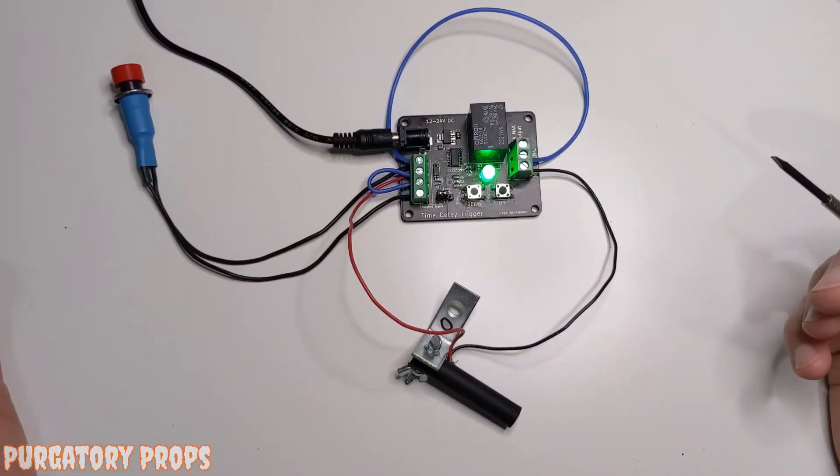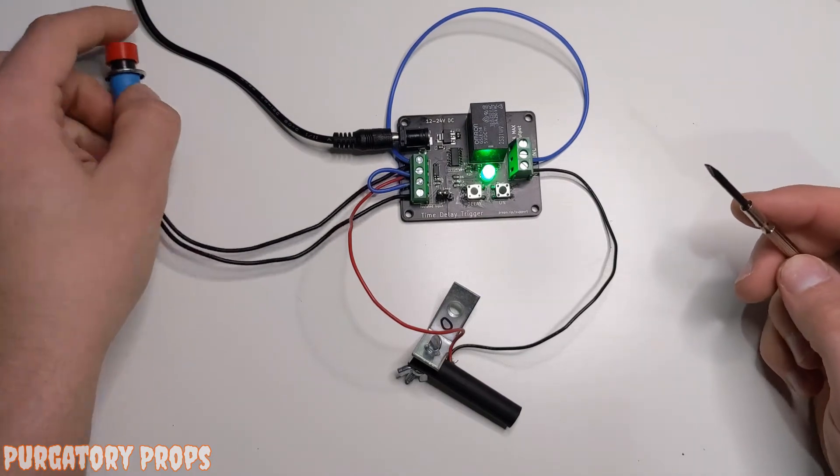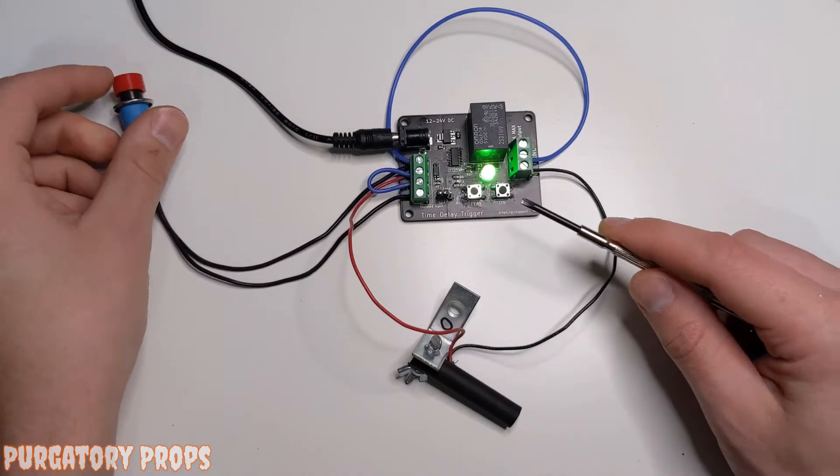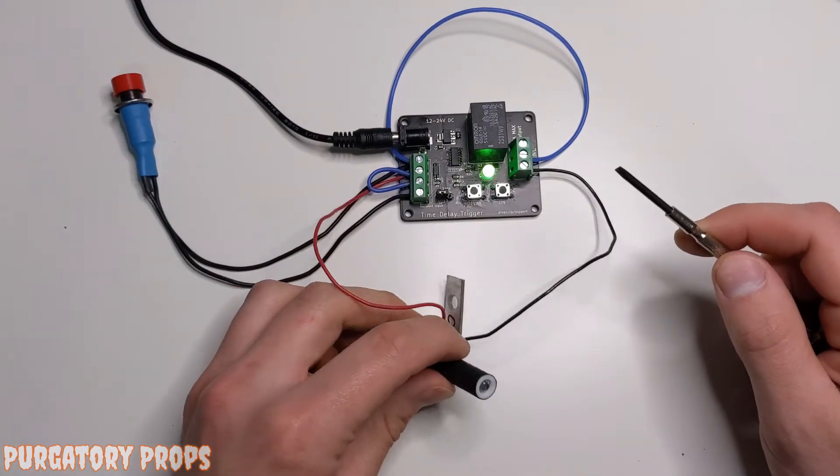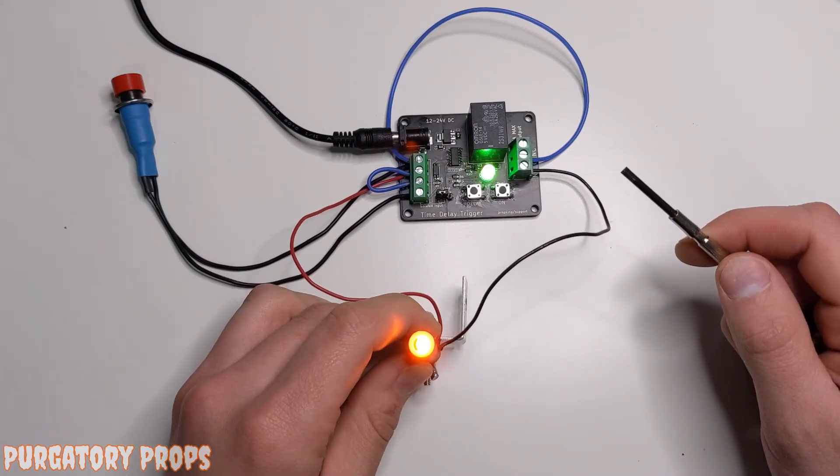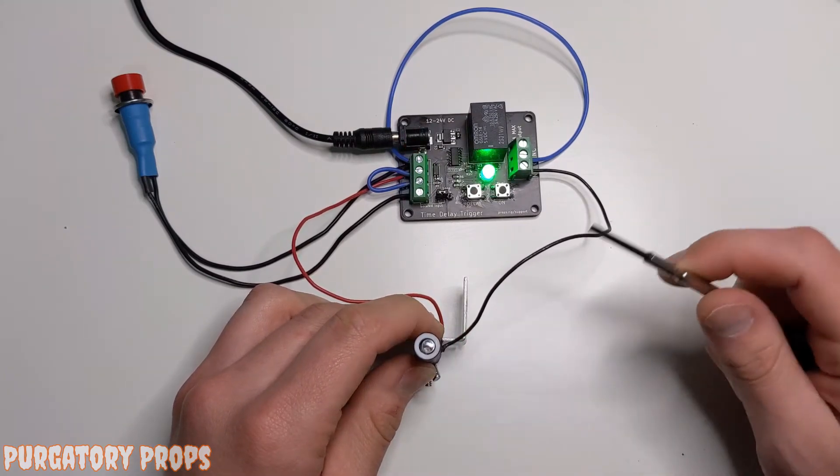So we have a green light which means it's just in standby. If we trigger this, it will start flashing so now it's in the delay. You'll hear the relay and the LED turns on.